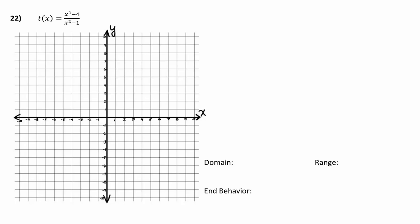And so problem number 22 here in our notes, t(x) equals x squared minus 4 over x squared minus 1. Be careful that you do not make the mistake of trying to cancel out terms. That's not something that really works. What we have to do with these two things is recognize that they are quadratics, actually a difference of two squares.